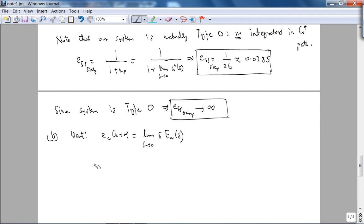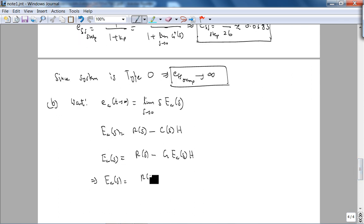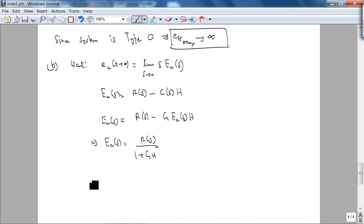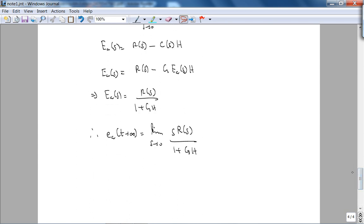So EA(s) is R(s) minus C(s) times H. The feedback gain is H. We don't want C, since C is G times EA(s), therefore EA(s) is R(s)/(1+GH). Therefore, the steady state error as t goes to infinity is the limit as s goes to 0 of s times EA(s), which is R(s)/(1+GH). And notice that you should always do these checks, that if you have unity feedback, H is 1, and this reduces to our result that we have been using so far, so that's good.